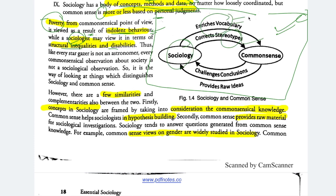Sociology enriches vocabulary — giving terminology like social mobility, stratification, etc. Common sense can challenge sociology's conclusions because they differ, which leads to more extensive research. Common sense also provides raw ideas — a hypothesis before studying is basically a statement derived from common sense knowledge, and then theory and research is built around it to prove or falsify it. So common sense also provides raw material for sociology.